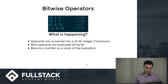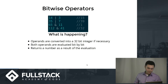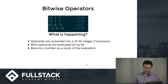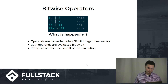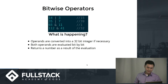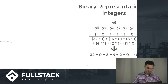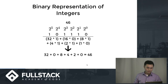So now there's bitwise operators. What happens there? 14 OR 3 — why does it return 15? Well, bitwise operators turn the operand into a 32-bit integer, and both operands are evaluated bit by bit, and then it returns a number as a result.